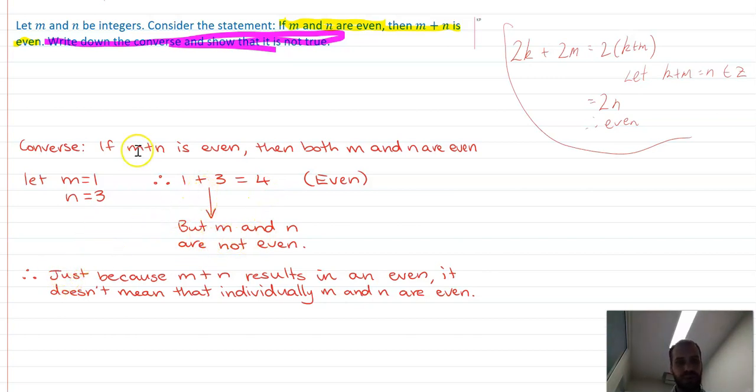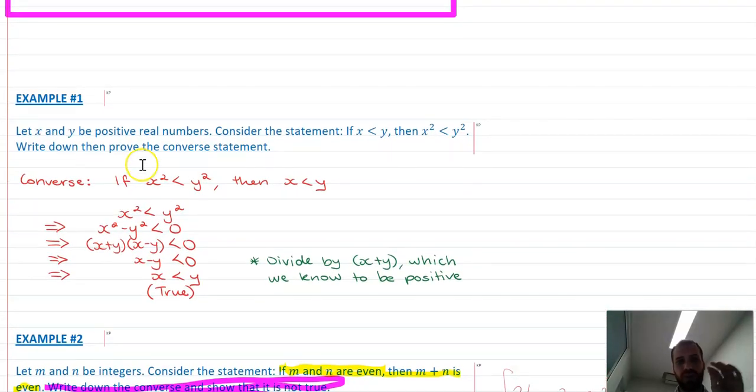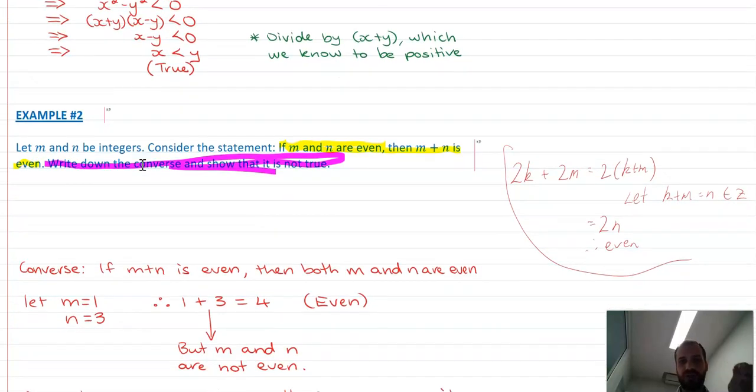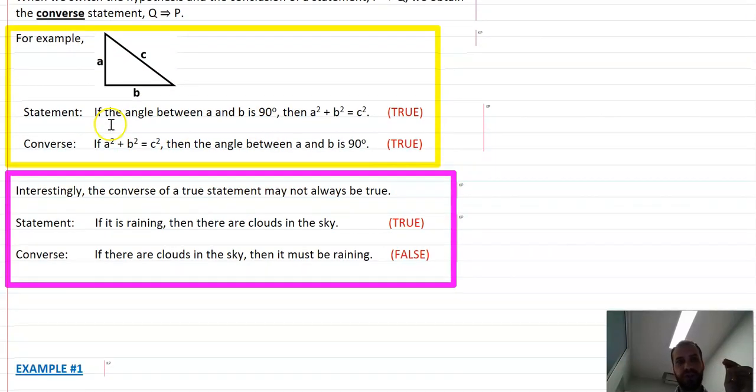Therefore, the converse of M and N are even, then M plus N is even is not true. It's broken. We've just done one small example to say it doesn't work. So important to note here that we've done a couple of examples, one of which the converse was true, one of which the converse was not true. And even in our beginning, the converse was true for this right angle triangle. The converse was not true for this rainy day.